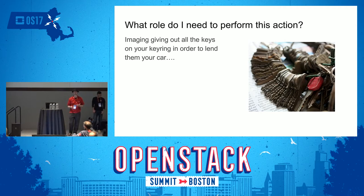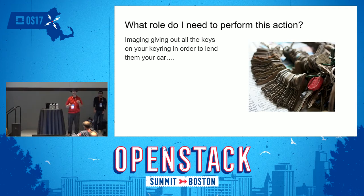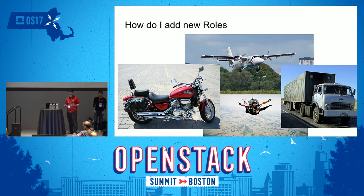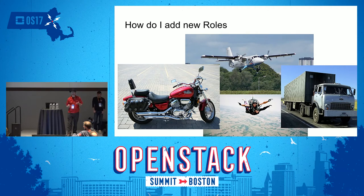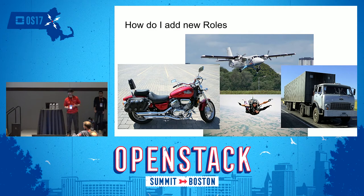That's kind of what we're at with Keystone nowadays. The key to the car is the role. You have a role on a project and use that to get access to things in OpenStack. For new types of resources, we need different roles — comparable to the different permissions on your driver's license for different vehicle types. Being qualified to drive a motorcycle doesn't mean you should be driving an 18-wheeler or jumping out of an aircraft.